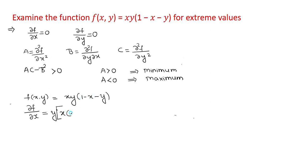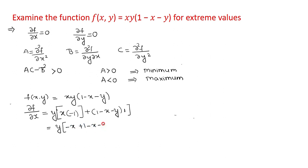Applying the product rule: 1 is 0, derivative of -x is -1, derivative of y is 0. So we get y(-x) + (1 - x - y)(1). Adding all terms: y(1 - 2x - y). So ∂f/∂x = y(1 - 2x - y).